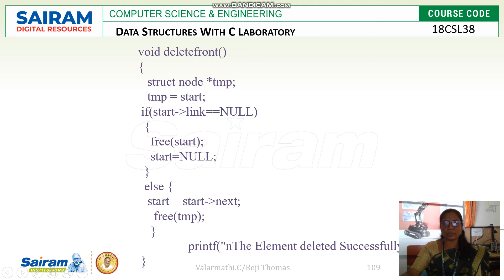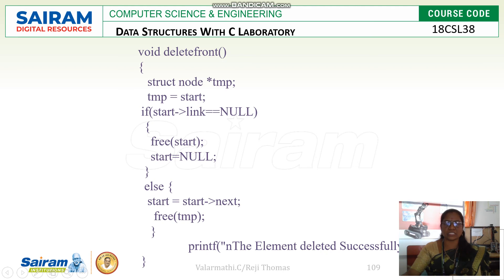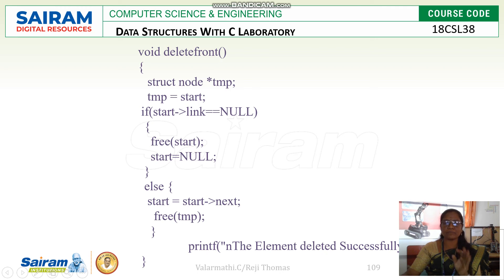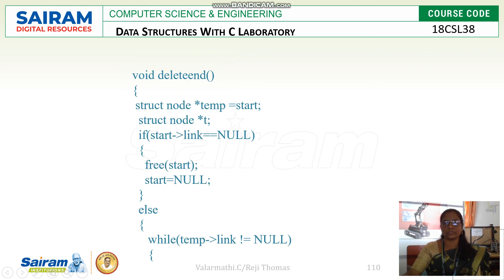Then move on to deletion operations — delete at the front. To delete the first node, we check if start->link equals null, meaning it is the only node; we free it and make start equal to null. Otherwise, we move start to start->next, then free the temporary node. Freeing temp is the deletion of that one node.